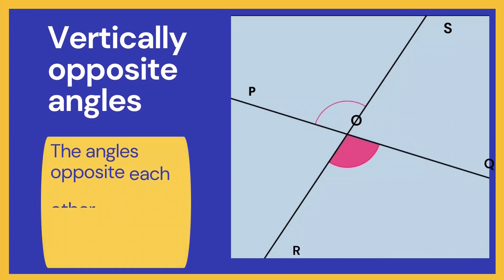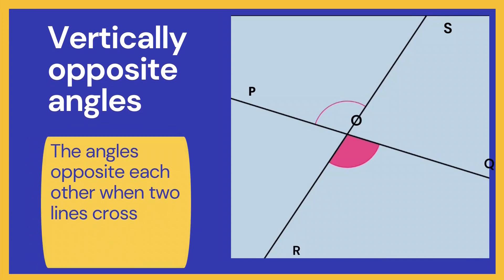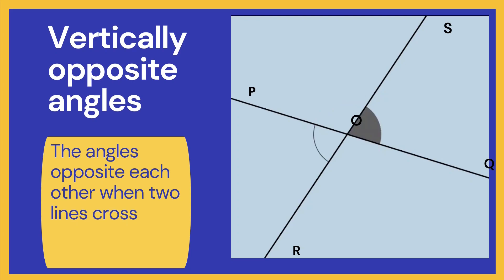First of all, let's see one of the very basic angles formed by two lines, which is vertically opposite angles. Here, you can see that lines P and Q are intersecting the line R and S. Vertically opposite angles are the angles opposite each other when two lines cross. Here, you can see angle P-O-S is equal to angle Q-O-R. Vertical in this case means they share the same vertex, which is the corner point O. There are two pairs of vertically opposite angles formed when two lines intersect — this is the second pair, and these two angles are also equal.